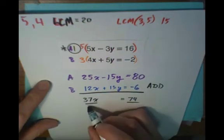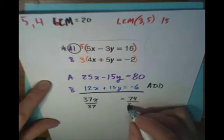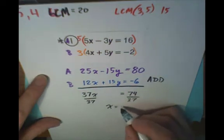To solve, simply divide both sides by 37, and I get x equals 2.